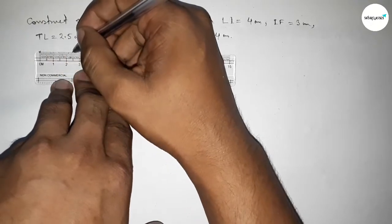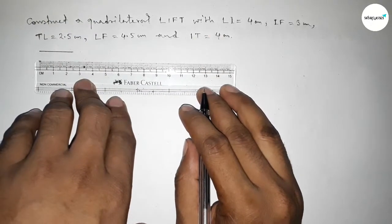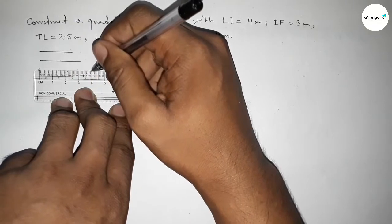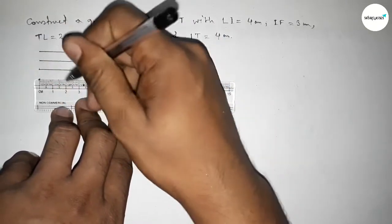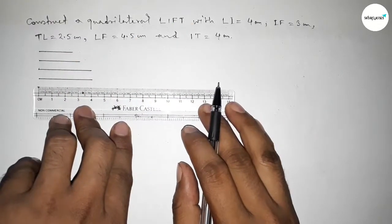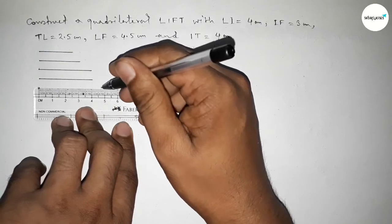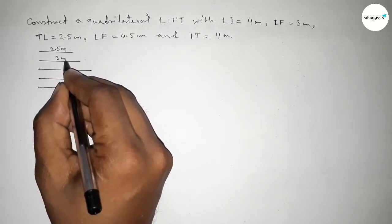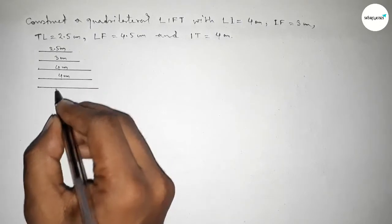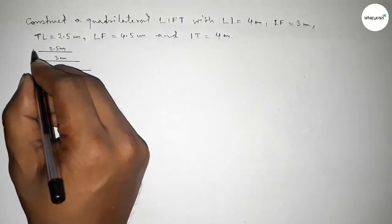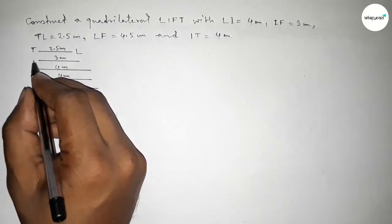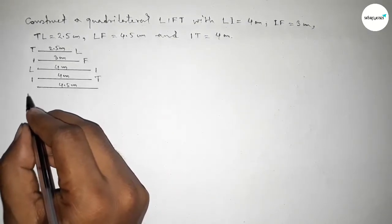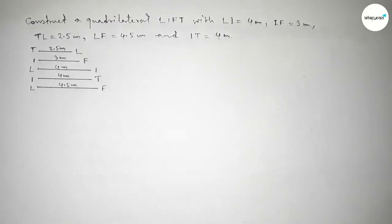First drawing here a line of length 2.5 centimeter, then drawing here a line of length 3 centimeter, then drawing another line of length 4 centimeter, again drawing here a line of length 4 centimeter, then drawing a line of length 4.5 centimeter. So this one is 2.5, this one 3 centimeter, this side 4 centimeter, this side also 4 centimeter, and this side 4.5 centimeter. This is TL, this one IF, this one LI, this one IT, and this one LF.